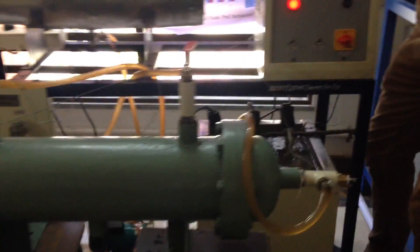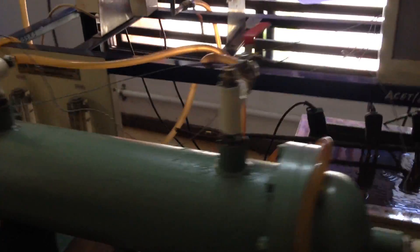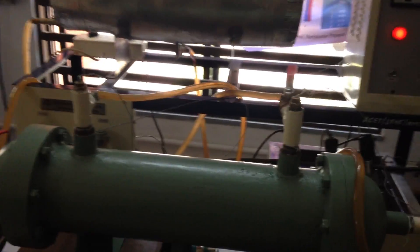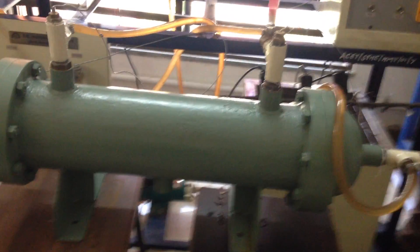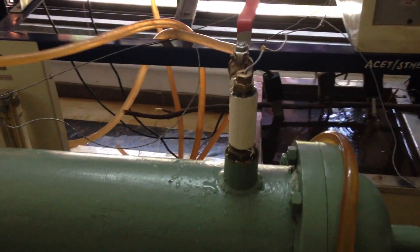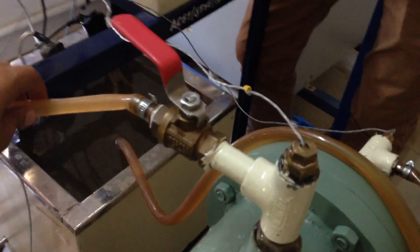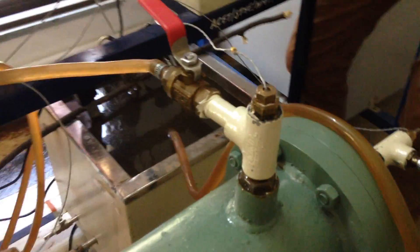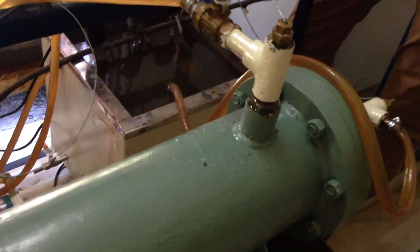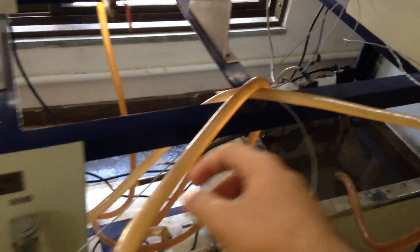We have made a basic modification of the shell and tube type heat exchanger. You can see here there is a cold flow inlet. The cold flow comes from this side to this side and goes to the outlet.